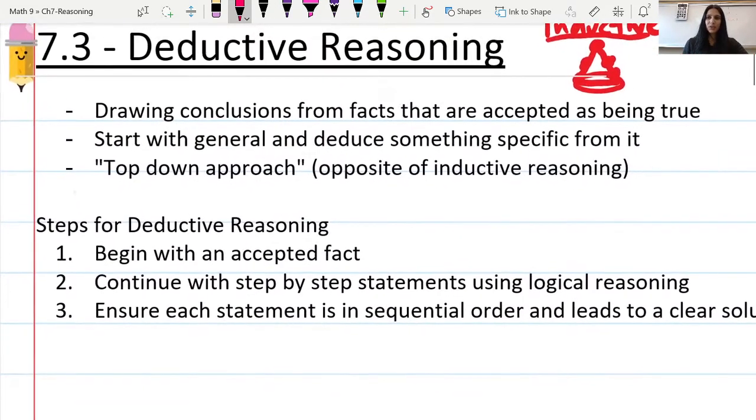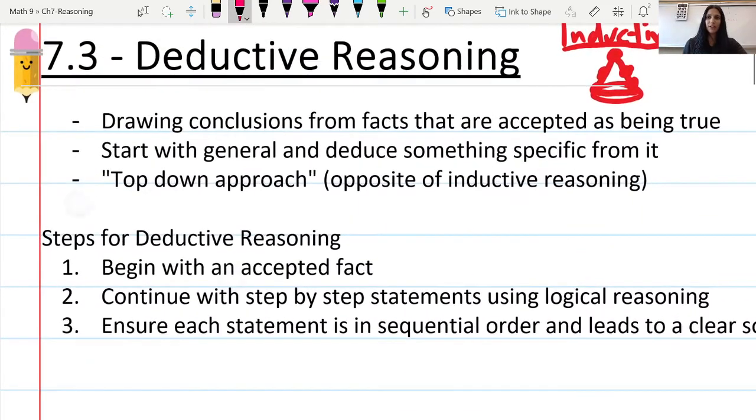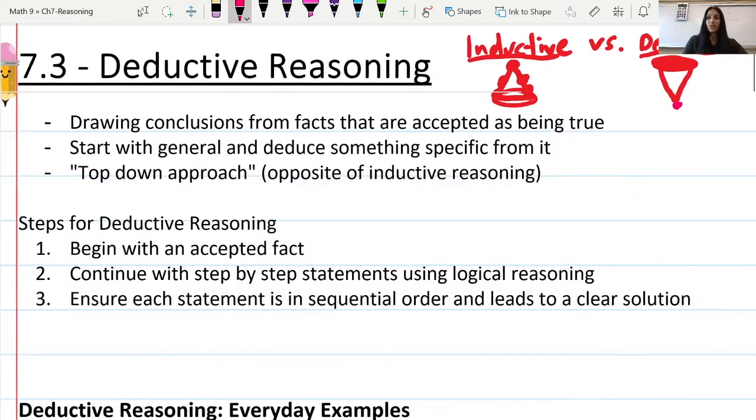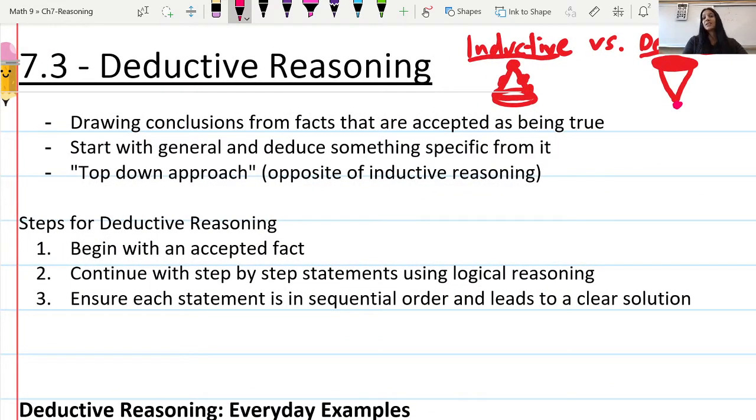Let's read through some definitions before we slide into examples. Deductive reasoning is drawing conclusions from facts that are accepted as being true. We start with a general statement and deduce something specific from it. This is a top-down approach, the opposite of inductive reasoning, as demonstrated in the diagrams.